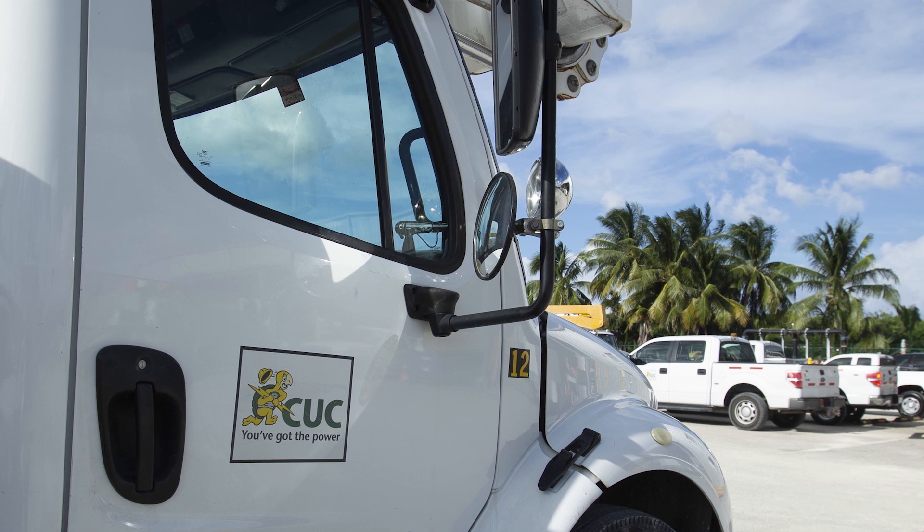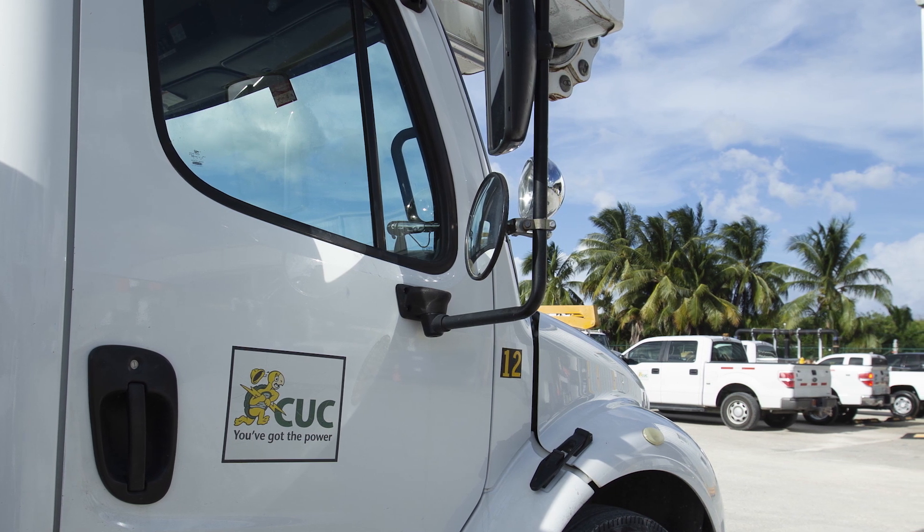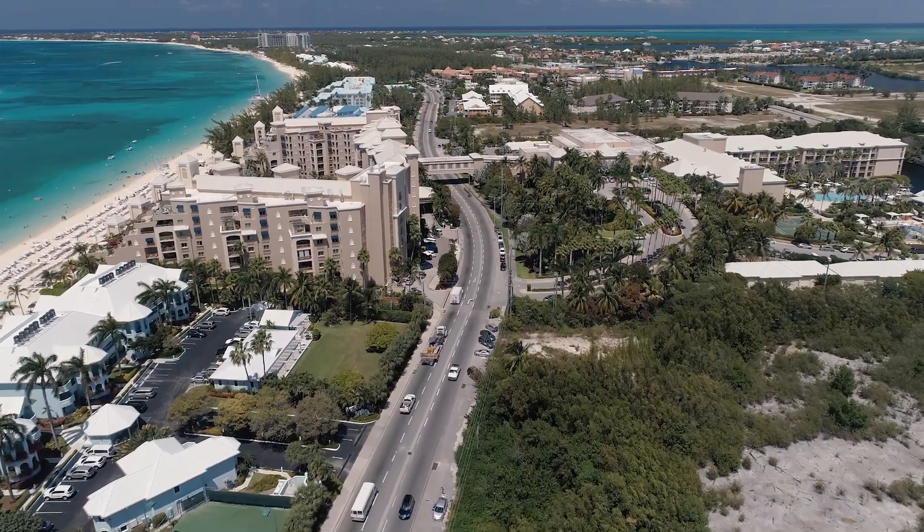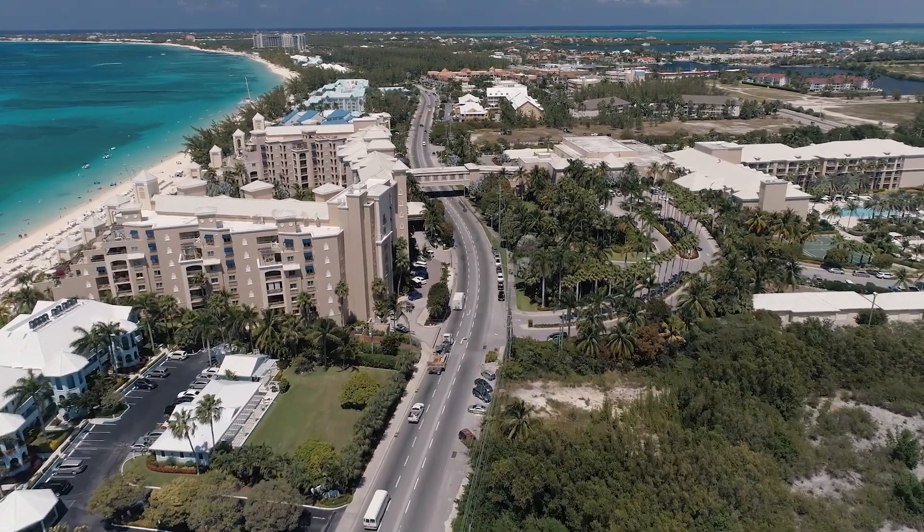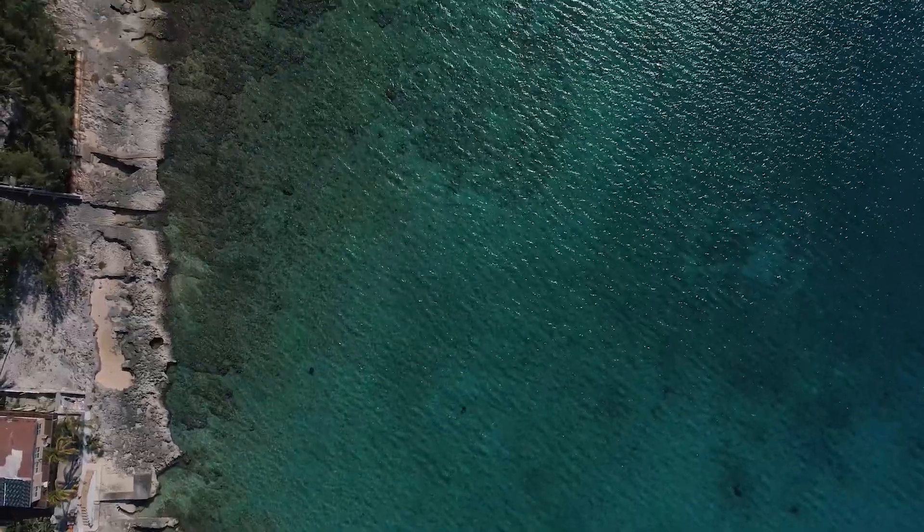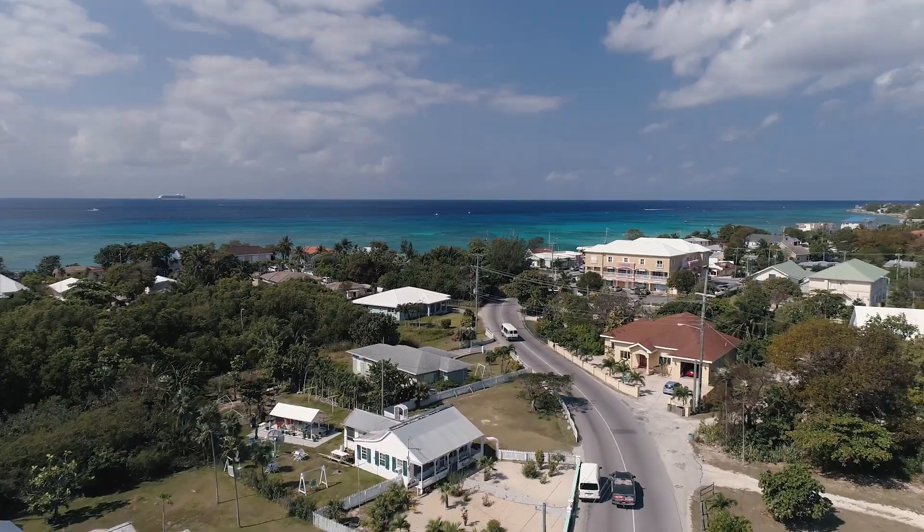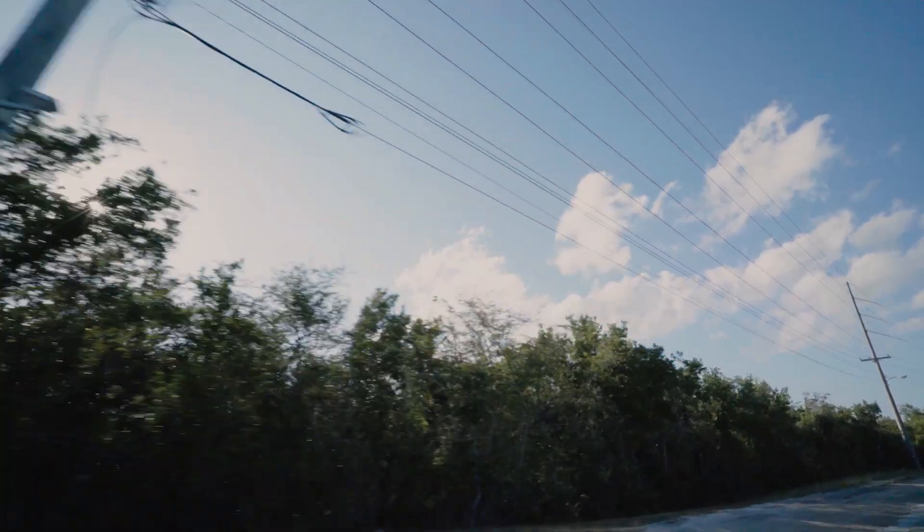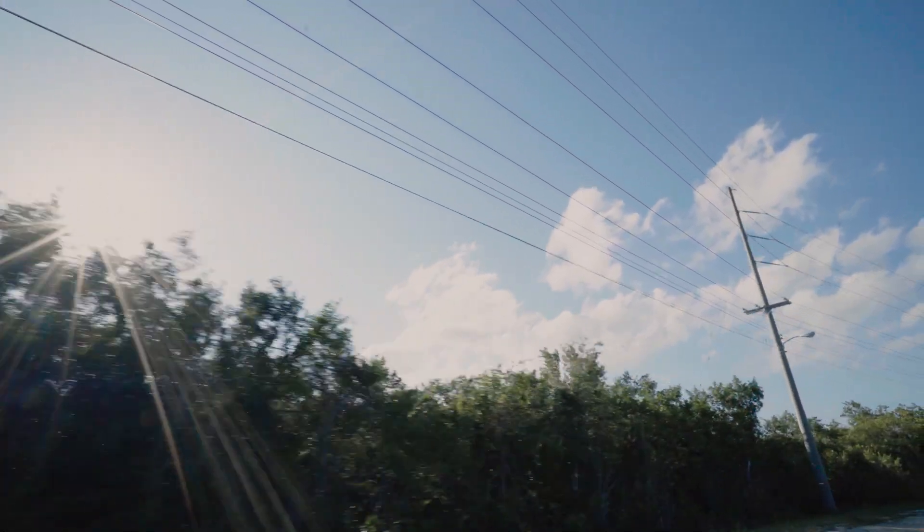Caribbean Utilities Company is the vertically integrated electric utility for the island of Grand Cayman in the Caribbean. Our service territory is a large financial and tourism based economy. There's a lot of demand for extremely reliable service from those sectors. That's been the focus of everything that we do here at CUC.